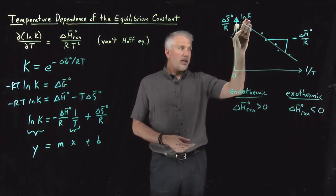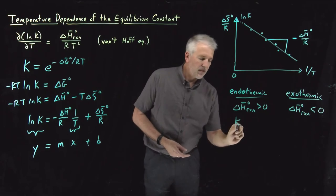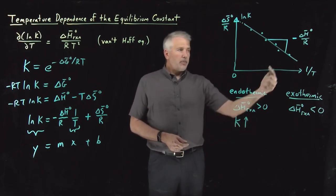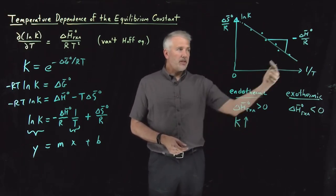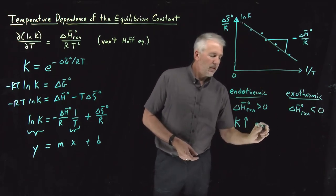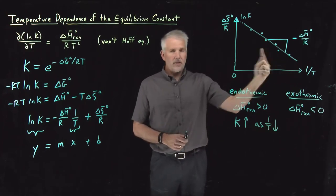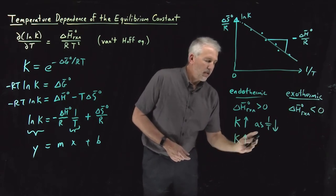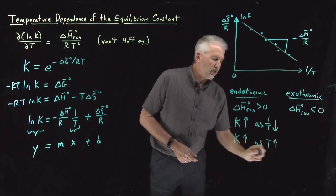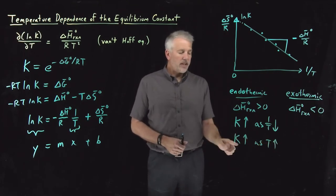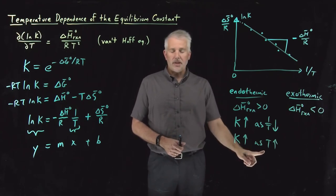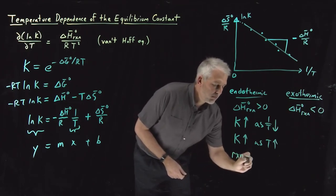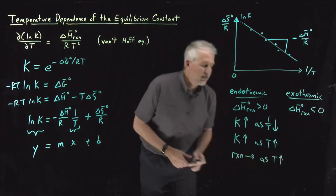That means log K drops as 1/T increases. Since log K and K go up or down together, the equilibrium constant increases as 1/T decreases — that is, as temperature increases. So endothermic reactions have equilibrium constants that get larger as temperature increases. When K gets larger, the reaction shifts more toward products as temperature goes up.